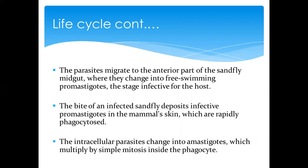When the sandfly takes a bite of a new host, it deposits these promastigotes into the mammalian skin — whether a human host or another animal host. Once these promastigotes are taken up, the first thing that happens is phagocytosis. Inside the phagocytes, the promastigotes change into amastigote form and continue multiplying until they cause the phagocyte to burst, releasing amastigotes into the blood circulation.